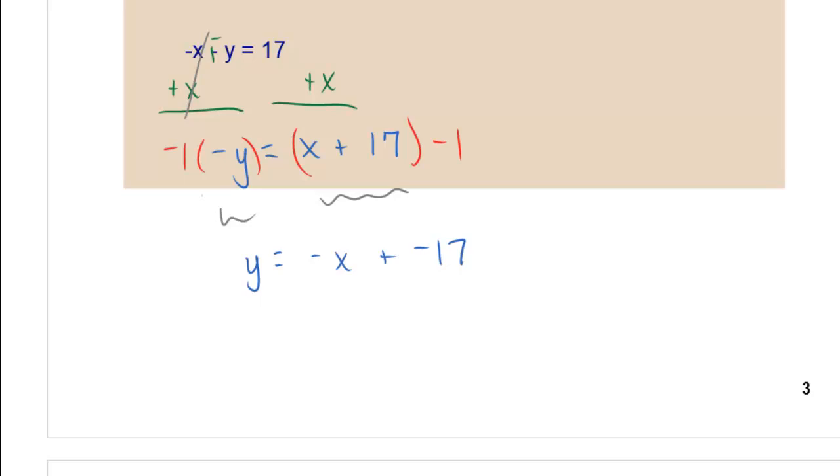Now we can't leave that y negative. Remember, whenever you solve, if you're solving for a variable, it needs to be positive. So we're going to multiply by negative 1. Negative 1 times negative y is just y, and we multiply the other side by negative 1 as well. Remember to use your distributive property. When you multiply negative 1 times x, you get negative x. When you multiply negative 1 times 17, you get negative 17, so your answer is y equals negative x plus negative 17.